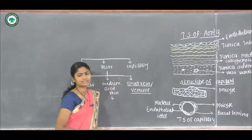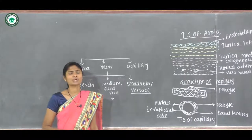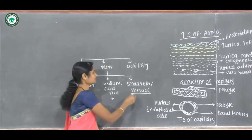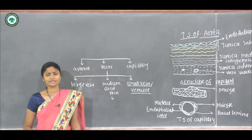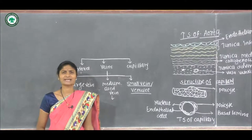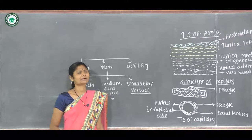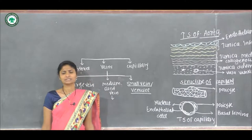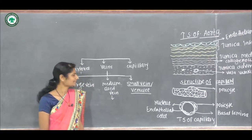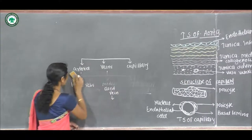Small veins and venules are the smallest veins, called venules. As venules increase in size, the adventitial cells become thicker and the muscles become multi-layered. The media of these venules contains collagenous and elastic fibers.